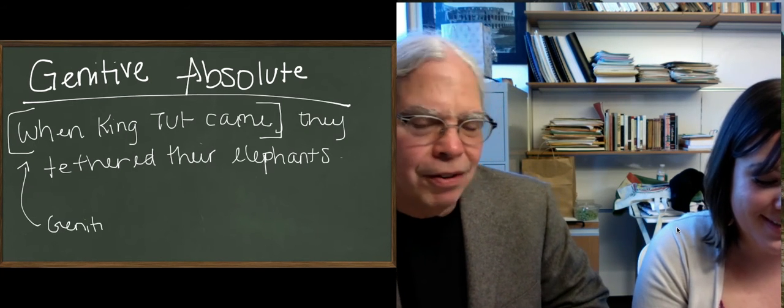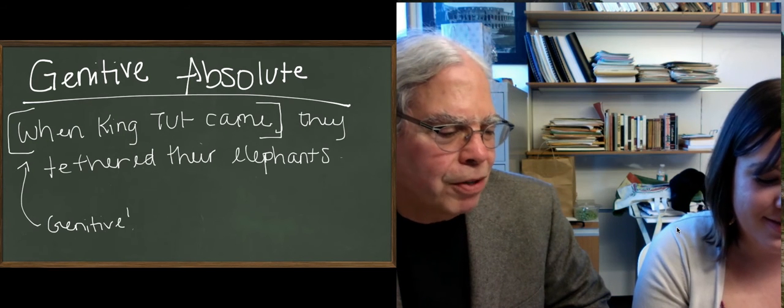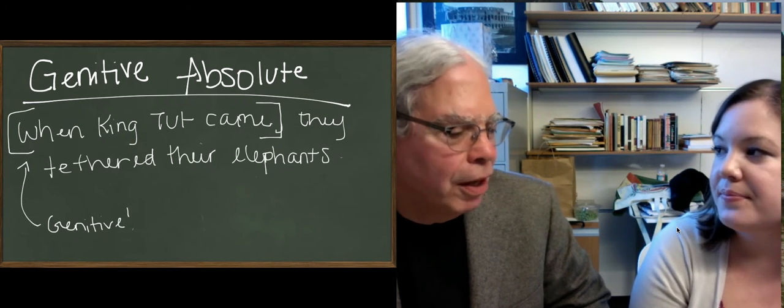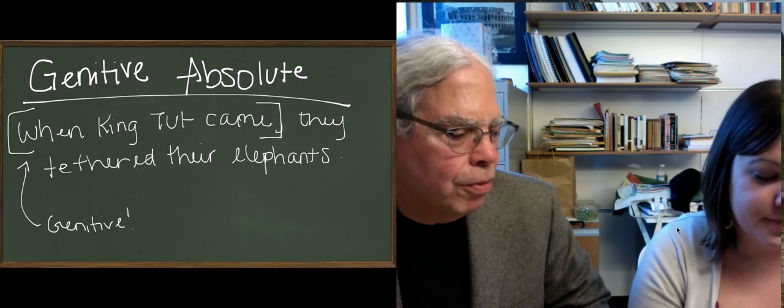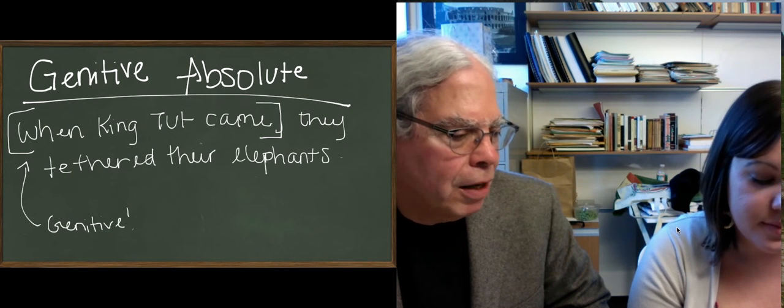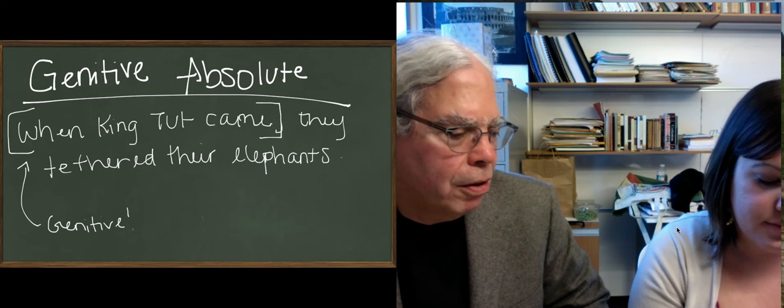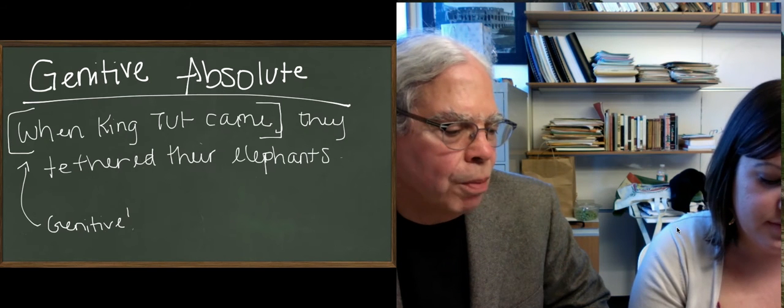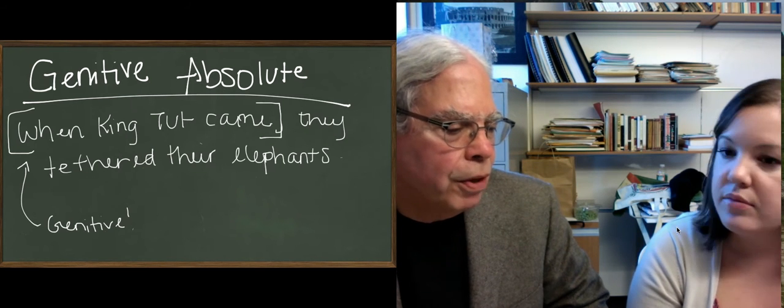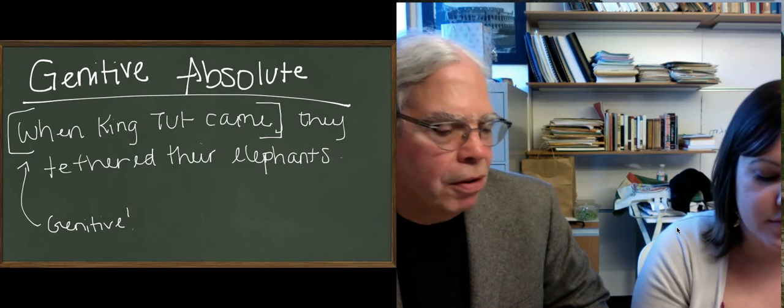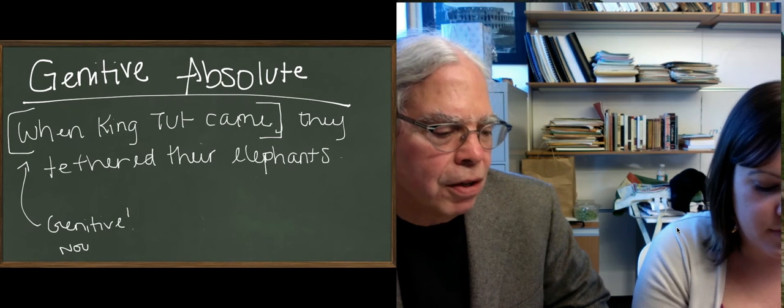There are some very interesting and weird reasons for this. But that's what happened. So, what you do when you want to make a grammatically separate subordinate clause into a participial clause is you put the noun that's the subject of the subordinate clause in the genitive case.